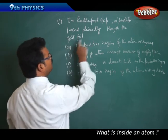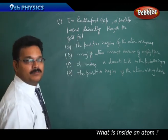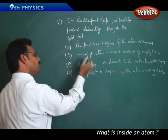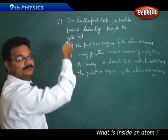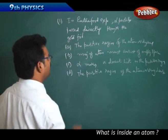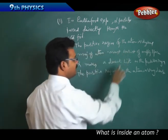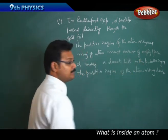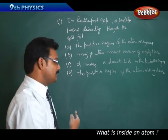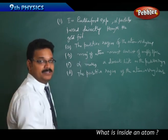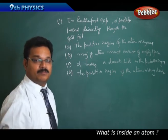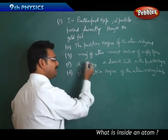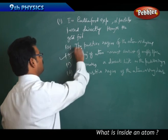It passed directly through the gold foil means if this board is gold foil, this is the alpha particle coming towards the board and going inside the board and going to the other side. That means the positive region of the atom is very small? No. Majority of the atom must consist of empty space - yes, because if positive charge is there it repels. But instead of repelling, the alpha particles go into the gold foil. So the right option is B.